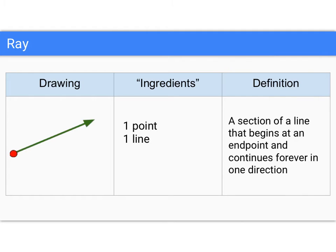You could also build a ray. So for a ray, you take a line and you put one point on it. And the ray is the part of that line that starts at that point and goes on forever. So one point plus one line, you can put those together and make a ray.